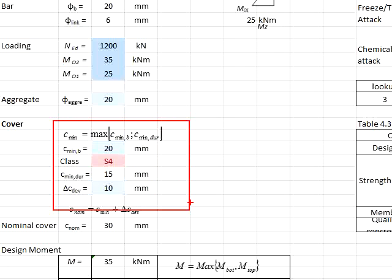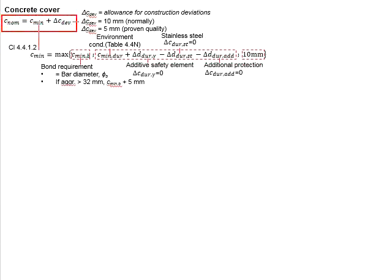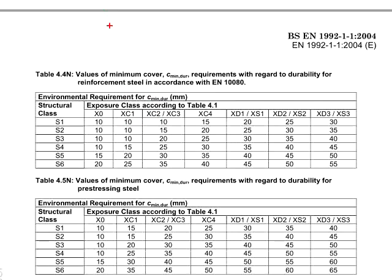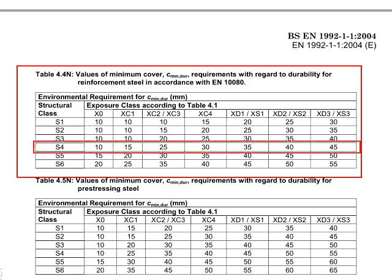First, determine the concrete cover of the column. The nominal cover is c_nom equals c_min plus the allowance for construction deviations. The deviation allowance equals 10 mm, and c_min is governed by the bar size, exposure class, and a minimum of 10 mm. The bar size is 20 mm. For exposure class, refer to table 4.4N. For exposure class XC1 with structural class S4, the c_minimum for durability is 15 mm.